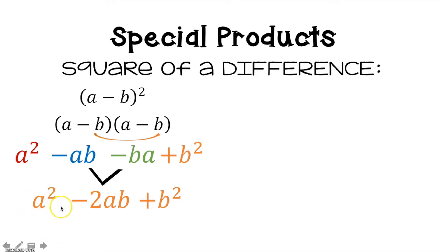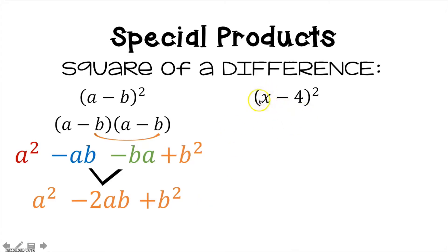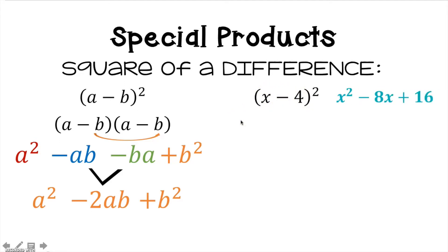The shortcut: your first term squared, minus double your first times your last, plus your last term squared. So for (x − 4) squared: first term squared gives x squared, last term squared gives positive 16 (negative 4 times negative 4). The middle term is negative 4 times x doubled, giving negative 8x. Final trinomial: x squared minus 8x plus 16.